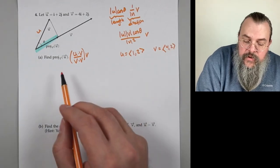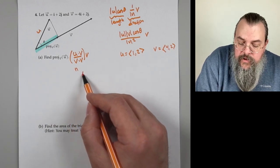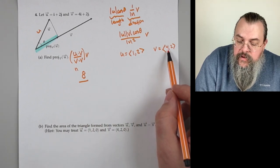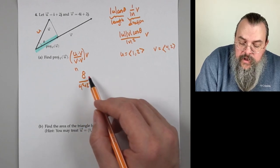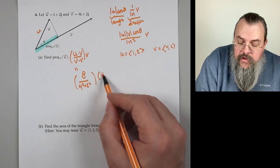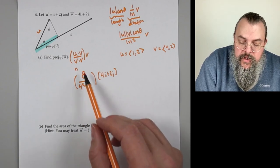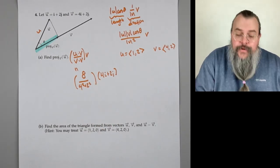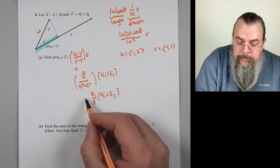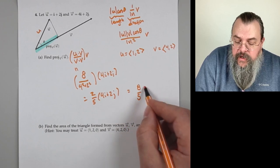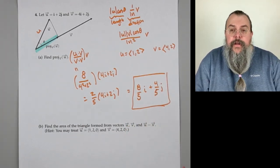u · v = (1)(4) + (2)(2) = 4 + 4 = 8. v · v = 4² + 2² = 16 + 4 = 20. So the projection is (8/20) times ⟨4,2⟩. Pulling out a factor of 4, that's (2/5) times ⟨4i + 2j⟩, which we can also write as 8/5 i + 4/5 j.